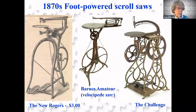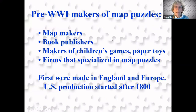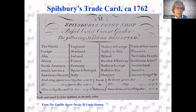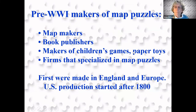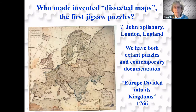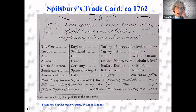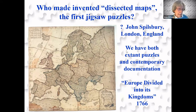Now, back to the map puzzles — who made them? There were several different types of companies that got involved: map makers themselves, some book publishers, makers of children's games and paper toys, and firms that specialized in map puzzles. The first dissected maps were made in England and Europe; US production started after 1800. There's quite a debate about who made the first jigsaw puzzle, which happened to be a dissected map. There's quite a dispute between the Brits and the rest of the Europeans.